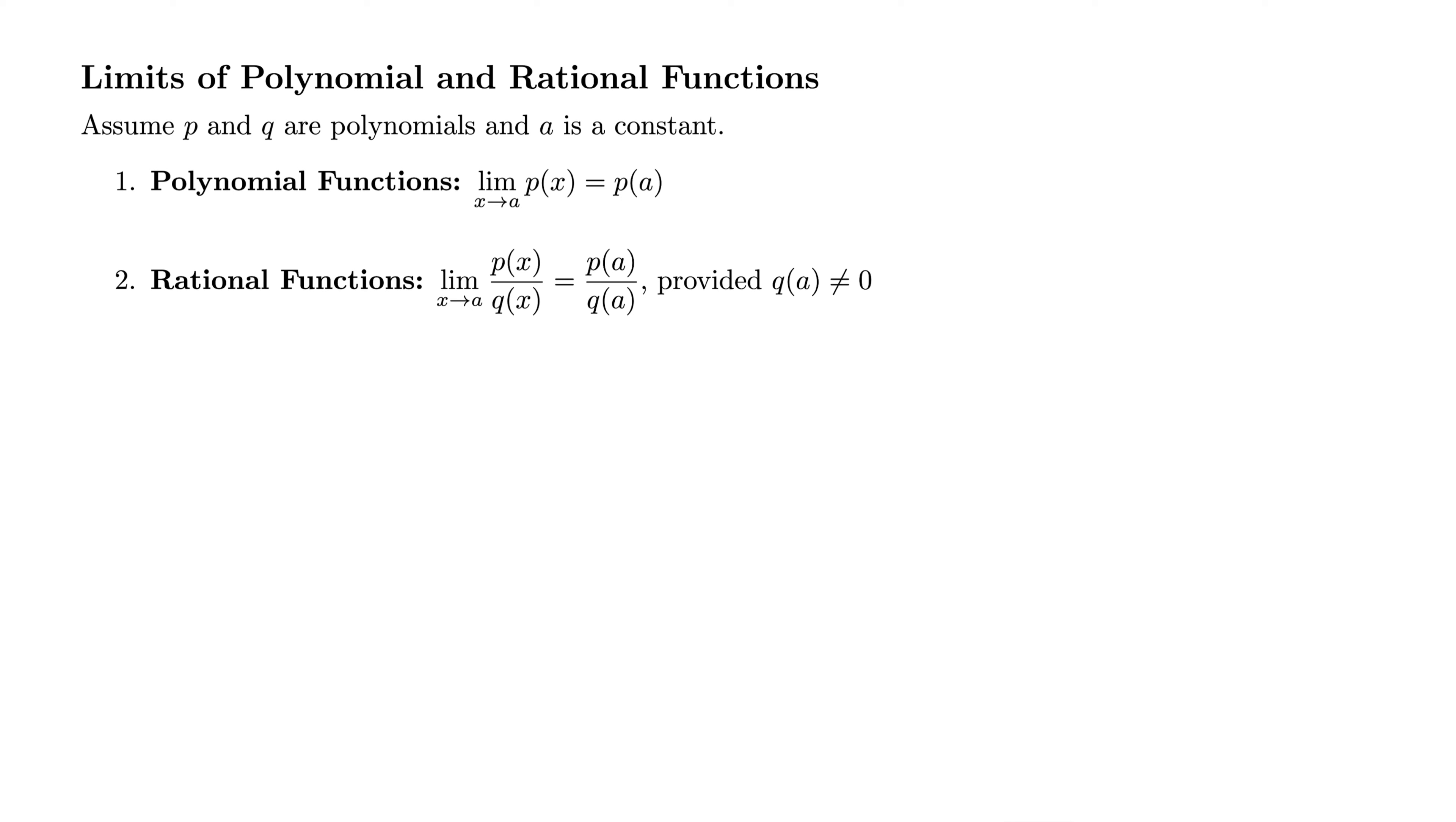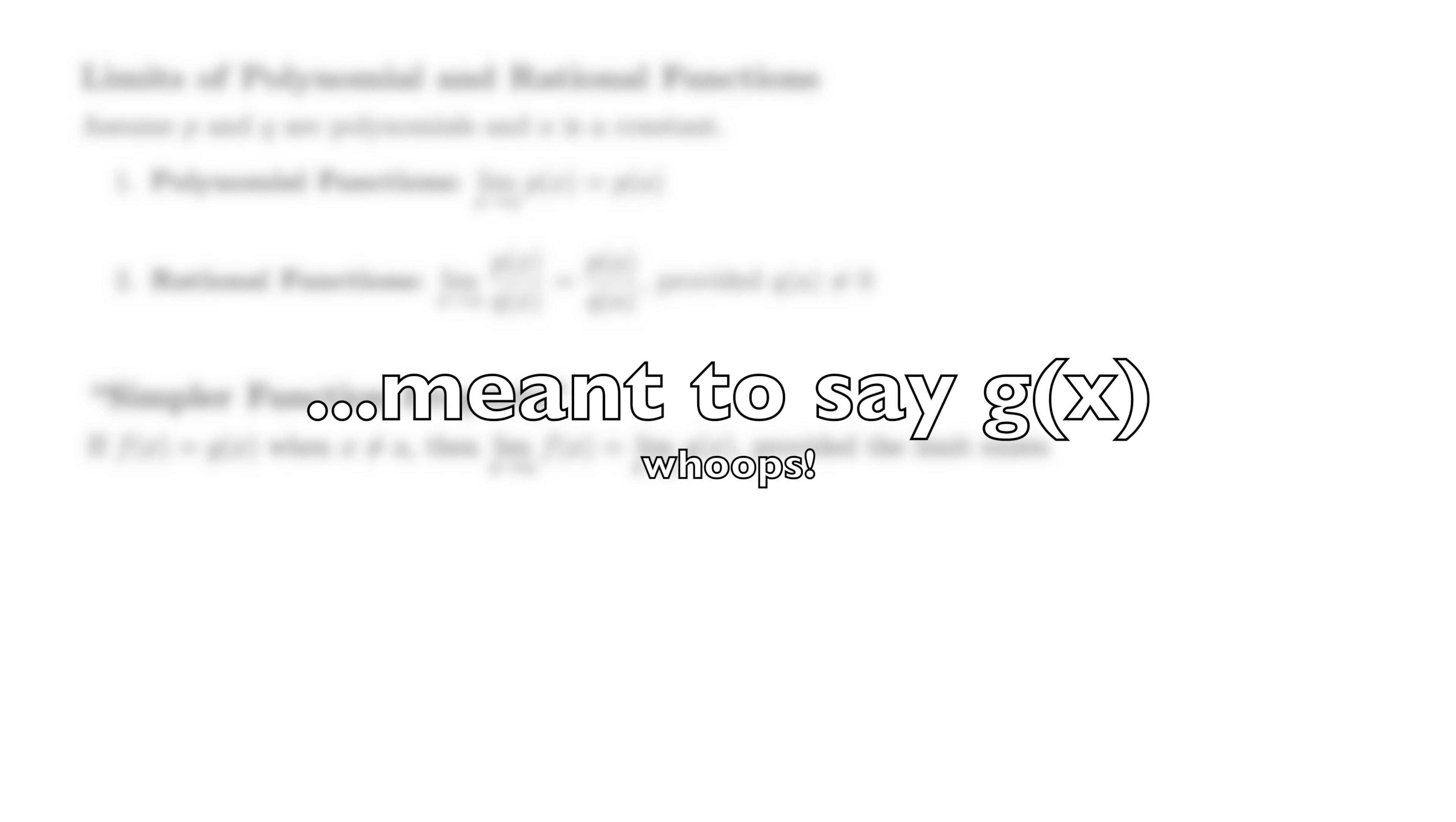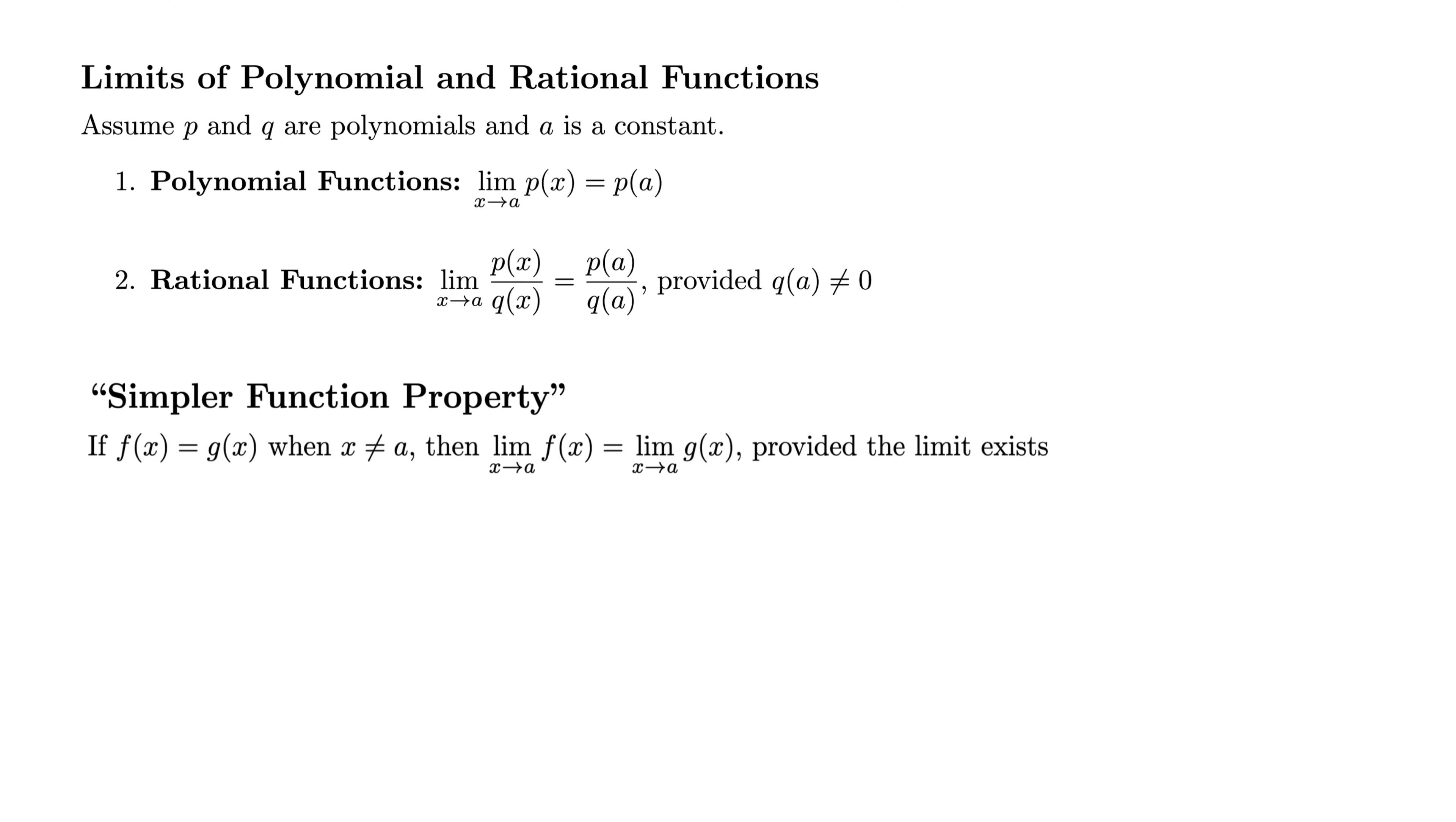So now that we can work with polynomials and rational functions and powers and roots, there's one last property that will really allow us to get busy evaluating some limits. This is known in some circles as the simpler function property, and it says if f(x) equals g(x) when x does not equal a, then the limit as x goes to a of f(x) equals the limit as x goes to a of g(x), provided such a limit exists. So what this is is a fancy mathematical way of saying cancel first and then try to evaluate the limit. Or I'll say a little more accurately, cancel first and then try the limit again.